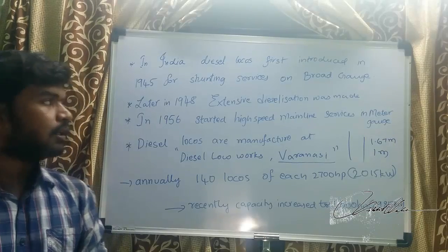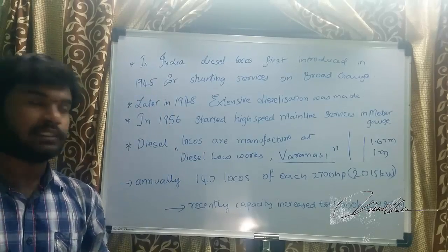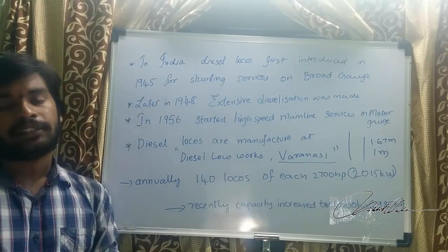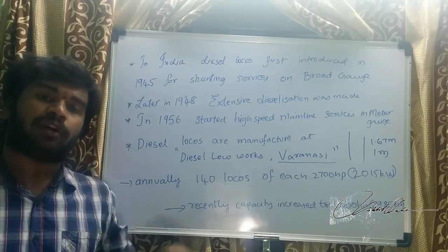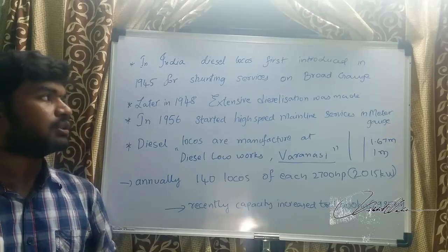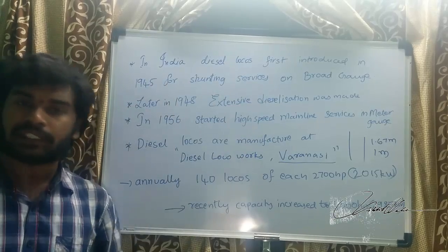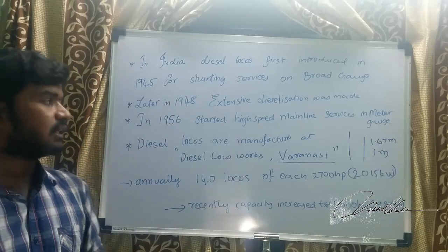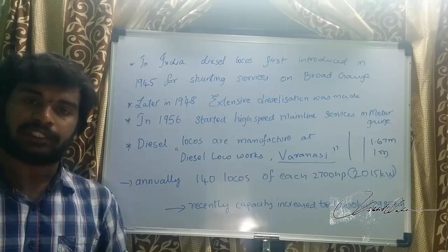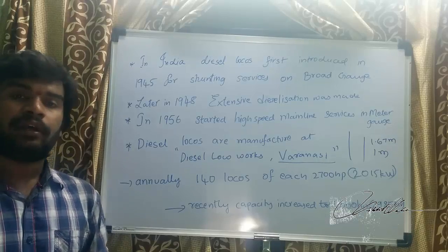In India, diesel locomotives were first introduced in 1945 for shunting services on broad gauge. Shunting services refer to trains used inside railway yards for internal transport of goods and materials within the workshop. Later, in 1948, seeing the performance of diesel drives, extensive dieselization was carried out — converting existing steam drives into diesel drives.